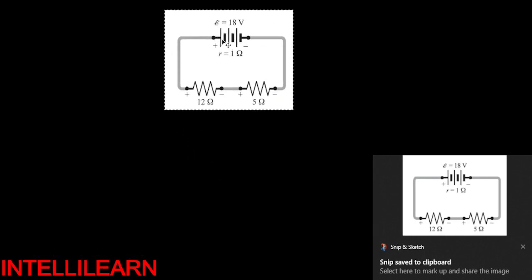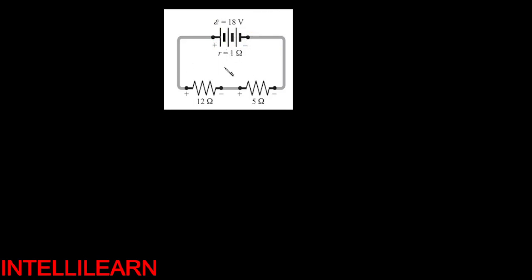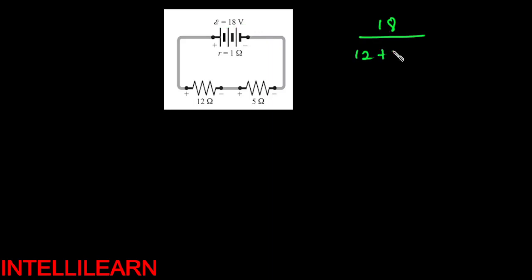So this is the question. If you look at this question, I have a 12 ohm resistor and a 5 ohm resistor, an internal resistance of 1 ohm, and an 18 volt supply. Most likely you are going to have only one current passing through all of them. So you can easily find the current. The current will just be the voltage divided by total resistance: 18 divided by 12 plus 5 plus 1, which is 18 divided by 18, which is 1 ampere.